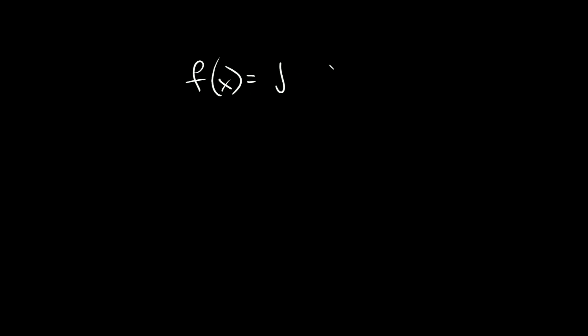That at least gives you a starting point. Now let's actually talk about the transformations, starting with translations. So if we had something like f of x is equal to the square root of x minus two — we have a number inside of the radical, so whenever you have a number inside the radical, this shifts your graph left or right.